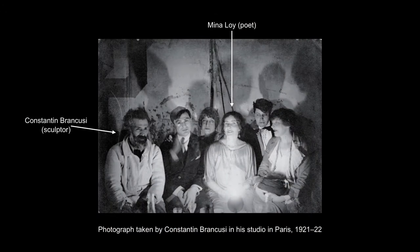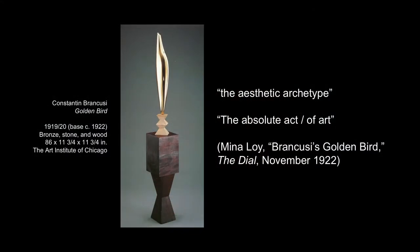Take the poet Mina Loy, who wrote poems about her contemporaries and their work, including the sculptor Constantin Brancusi. One notable poem is about Brancusi's Golden Bird sculpture. In a poem called 'Brancusi's Golden Bird,' Loy calls this sculpture 'the aesthetic archetype, the absolute act of art conformed to continent sculpture.' Seen from the vantage point of previous scholars, Loy's project, like Brancusi's, strives to isolate the image so that it reaches an apotheosis in the kind of self-contained formal purity of the artwork.